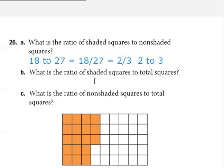What is the ratio of shaded squares to total squares? How many shaded squares do we have? 18. And how many total squares, though? 45.